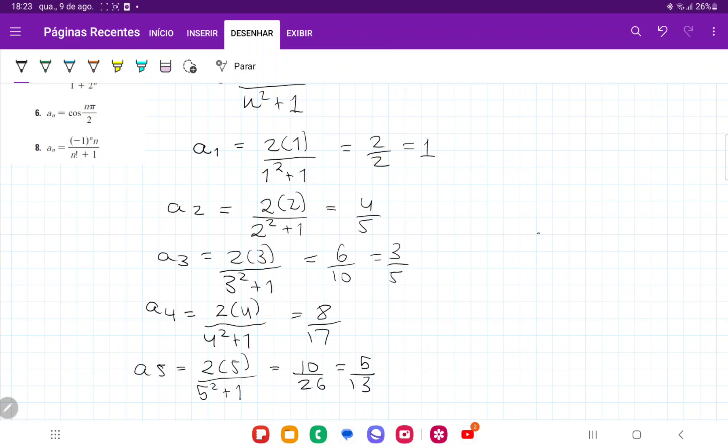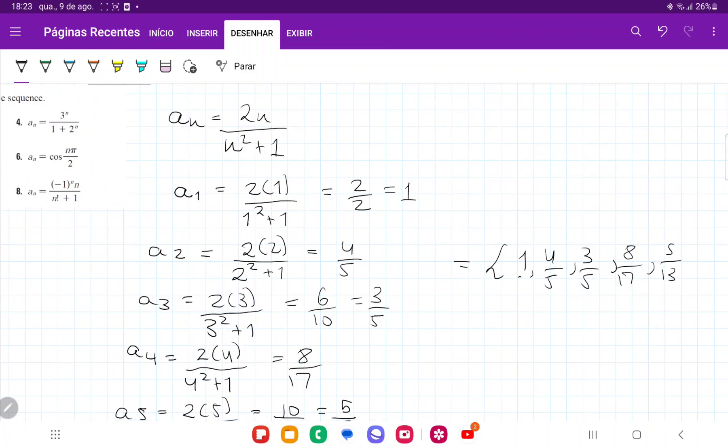And so we have a1, a2, a3, a4, a5, and so the first 5 terms are 1, 4 fifths, 3 fifths, 8 over 17, and lastly 5 over 13. And that is the first 5 terms of this sequence right here.